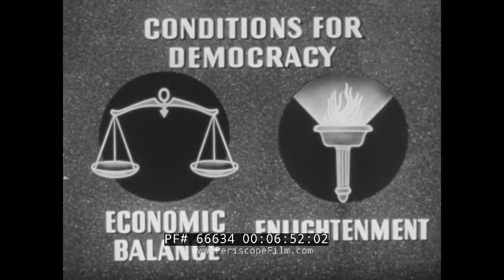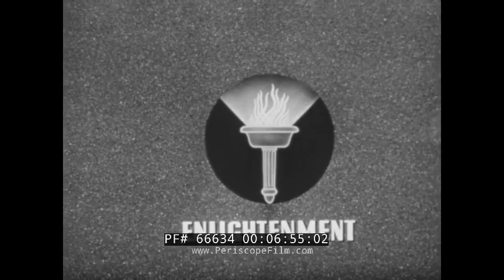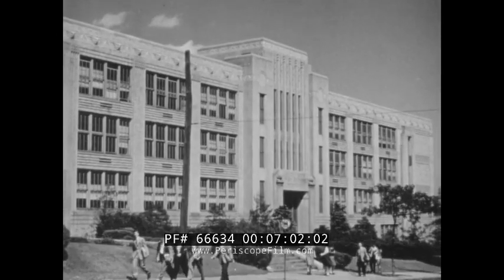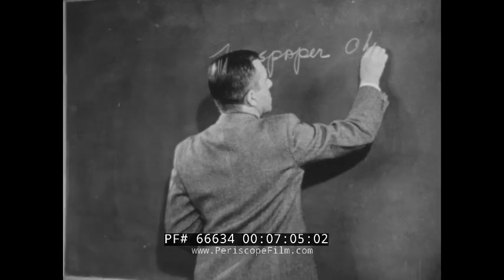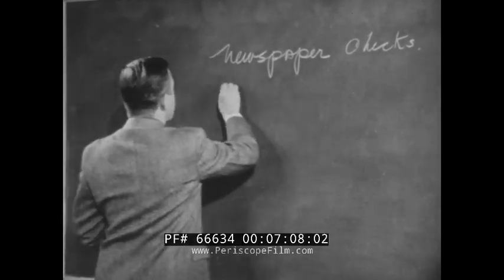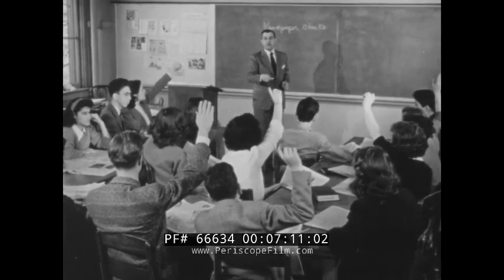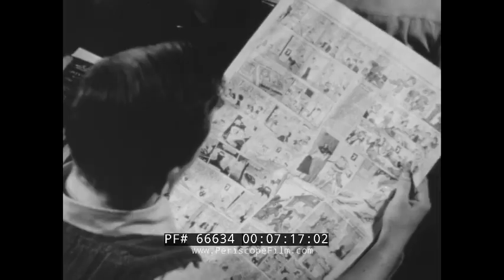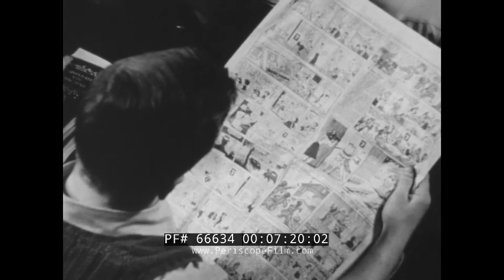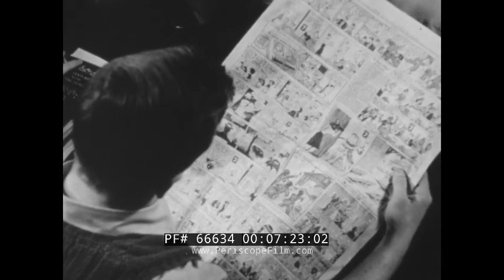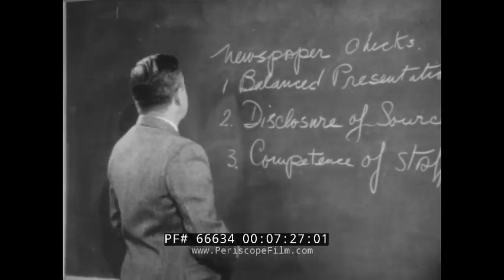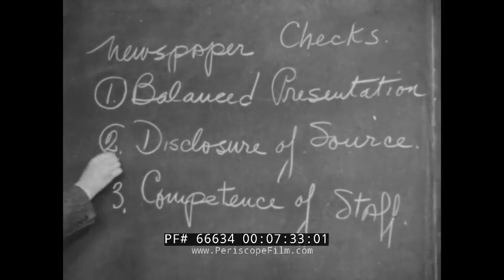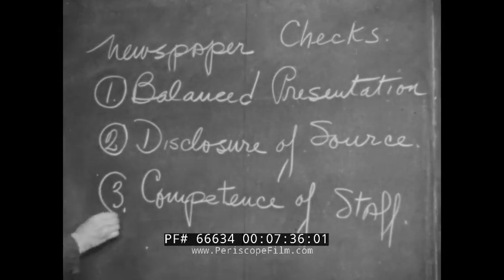Another important condition for democracy is enlightenment — making information available to citizens and giving them the skill to judge it. As public education increases, democracy grows. In checking a community for democracy, we must find out whether it provides schools adjusted to the needs of its young people. Just being able to get books and newspapers is no guarantee of democracy.